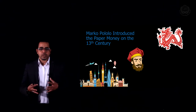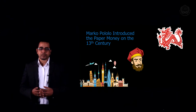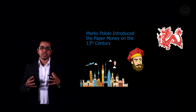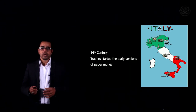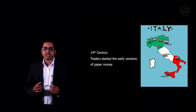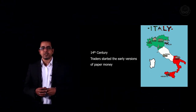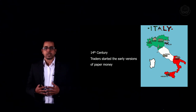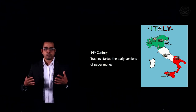The paper money that we hold in our hands today actually started in China. The Chinese governments were the first to issue paper money. Marco Polo transferred this experience from China to the rest of Europe. It wasn't until the 14th century when some form of paper money appeared. At that time, traders started settling their debts with promissory notes — a paper stating that the trader is obliged to pay the holder of the receipt a specified amount.